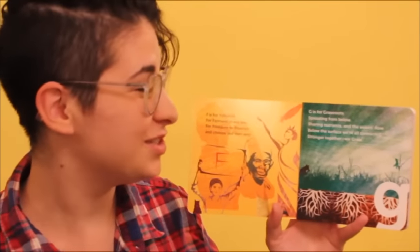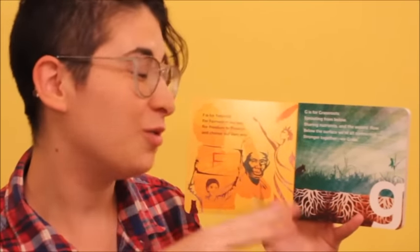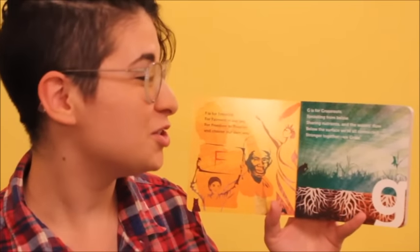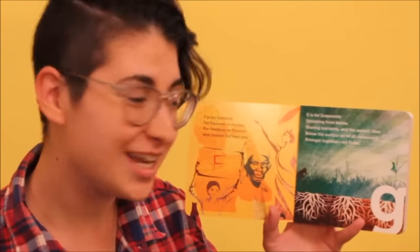G. G is for grassroots. Sprouting up from below. Sharing nutrients and the water's flow. Below the surface we're all connected. Stronger. Together. We grow.